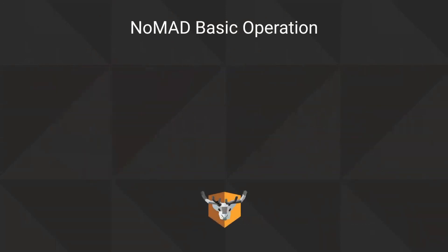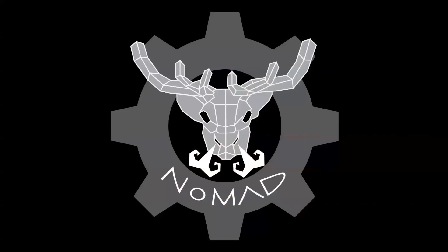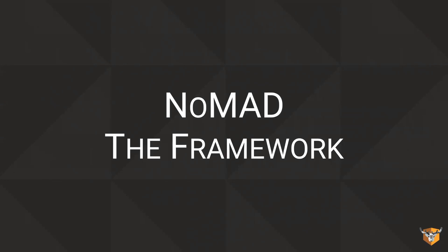Under the hood, Nomad has very basic operations: it looks up records for the domain controllers in DNS, then uses Kerberos to authenticate the user and looks up information in LDAP — exactly what Windows clients do. As we started looking to branch out with our product line, we decided to take that AD code and put it into a separate framework. We came up with the AD framework — represented by Kerry the Caribou — to use with Nomad, Nomad Login, Nomad Login Pro, and all the different products we have, so we can share our code around.